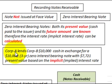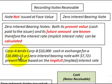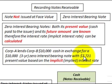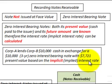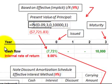In the example we're going to look at here, Corporation A lends Corporation B $10,000 in cash in exchange for a $10,000 three-year zero interest bearing note. There's no interest on this note, and its present value is $7,721 based on the implicit or implied interest rate. Let's go and see how we'd calculate this interest rate.